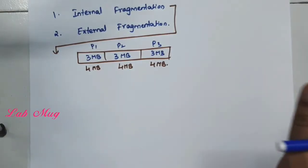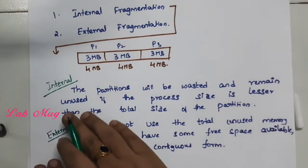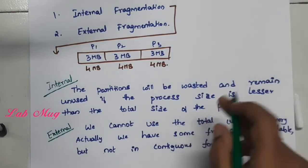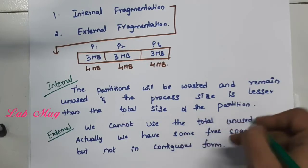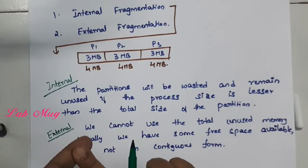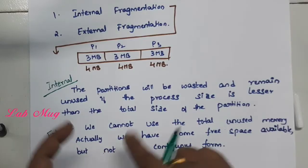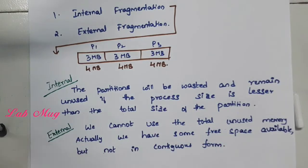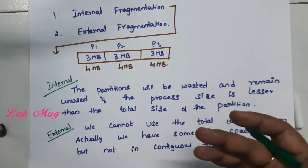So, some lines about internal fragmentation: when we already set up 1MB of memory, it is wasted. Another point to note: it is lesser than the total size of the partition. That means the total size of the partition is 4MB, but actually the need of the memory for P1 is only 3MB. So the needed memory is lesser than the total partition size. In that situation, this internal fragmentation results in wasted memory.